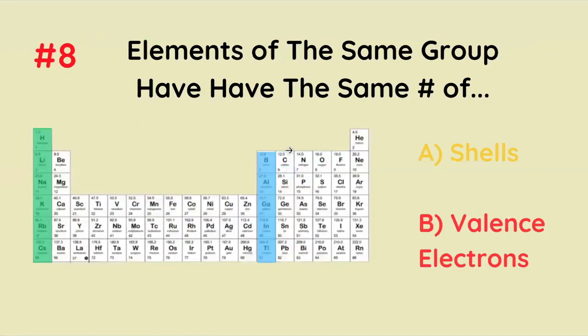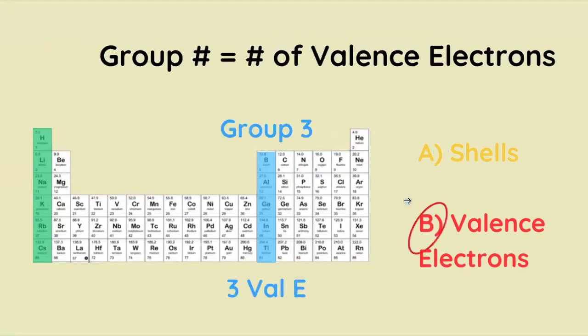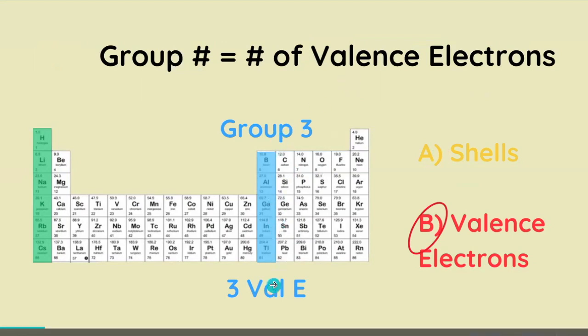Elements of the same group have the same number of shells or valence electrons? The correct answer is valence electrons, as the group number equals the number of valence electrons. So group three elements have three valence electrons each.